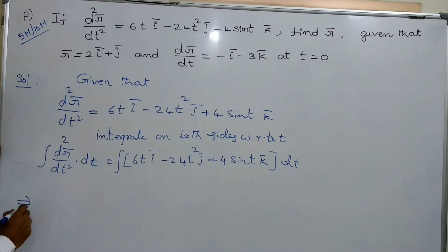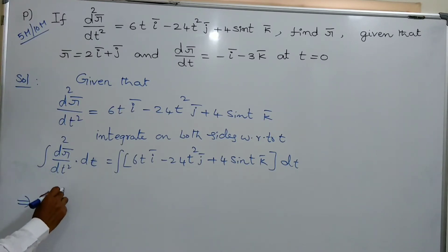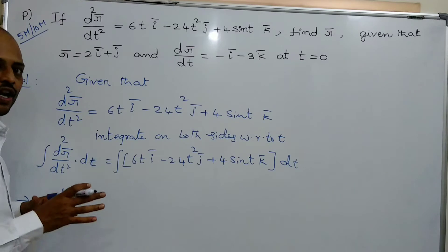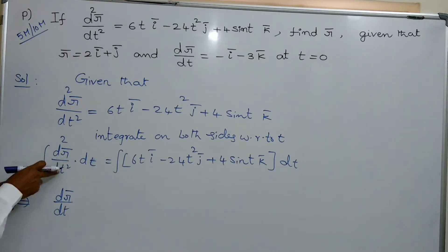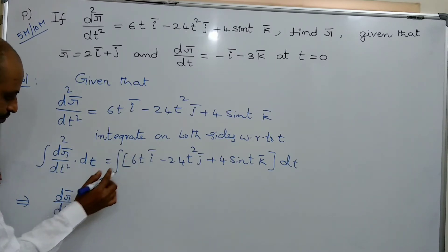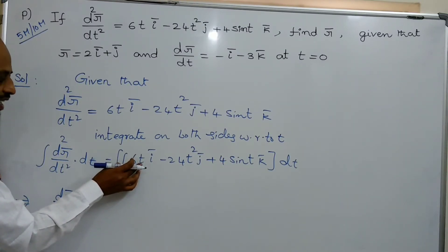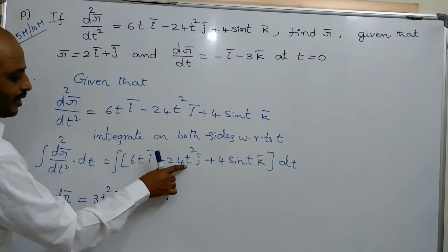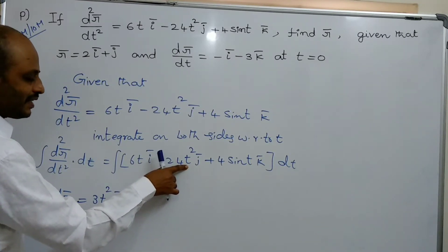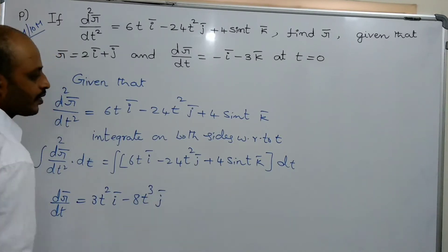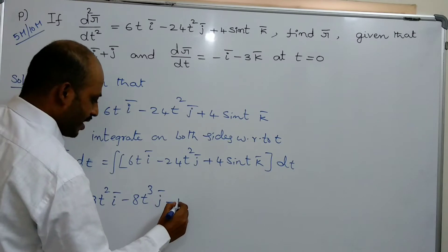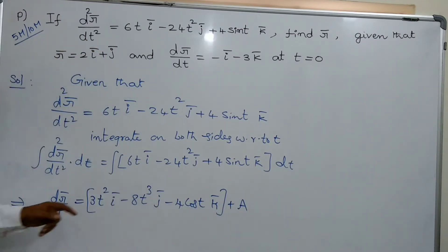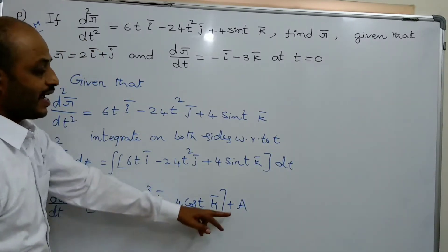Integration and differentiation are converse to each other. If you integrate d²r̄/dt² once, you get dr̄/dt, which equals 3t²ī minus 8t³j̄ minus 4cos(t)k̄ plus A, where A is the integral constant. Let this be equation number 2.